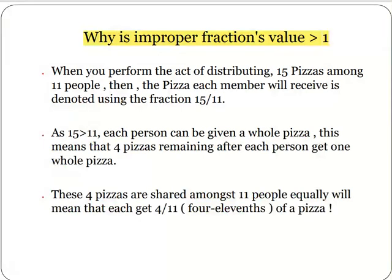When you perform an act of distributing 15 pizzas among 11 people, then the pizza each member will receive is denoted using the fraction 15 by 11. As 15 is greater than 11, each person can be given a whole pizza. This means that 4 pizzas remain after each person gets one whole pizza. Now these 4 pizzas are shared among 11 people equally, which means that each gets 4 by 11, or 4 elevenths, of pizza.